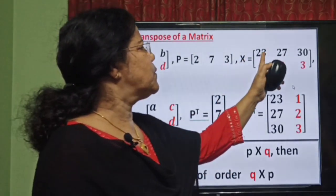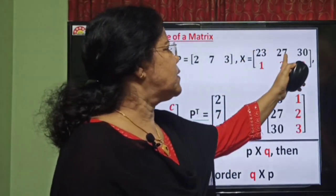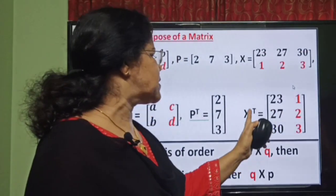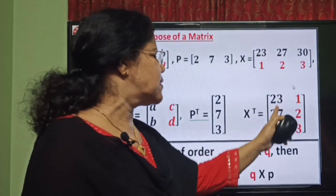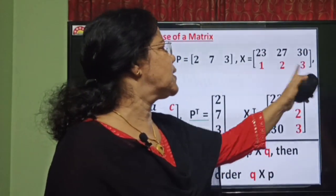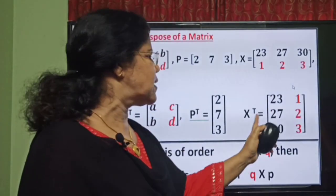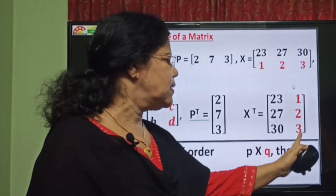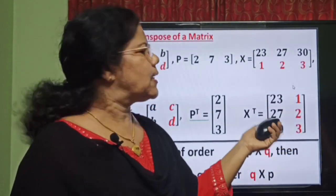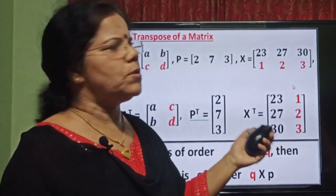Here, X has first row 23, 27, 30. In X-transpose, it is the first column. 1, 2, 3 is the second row; in X-transpose, it is the second column. Rows change to columns, columns change to rows.